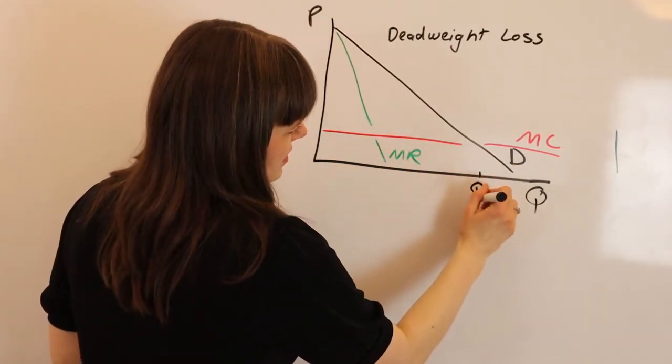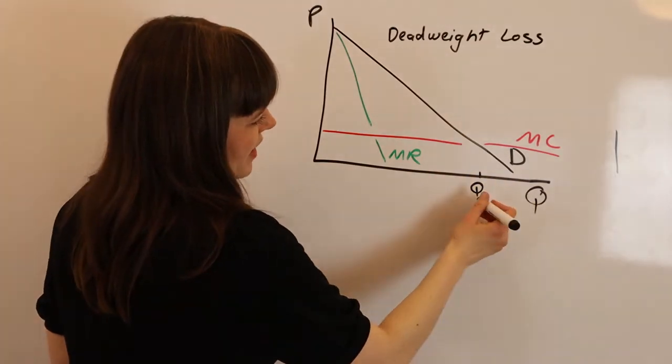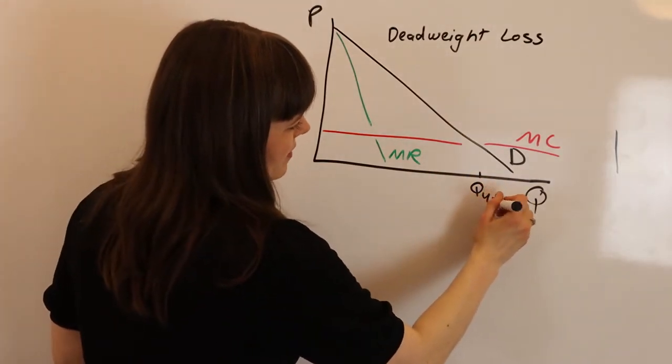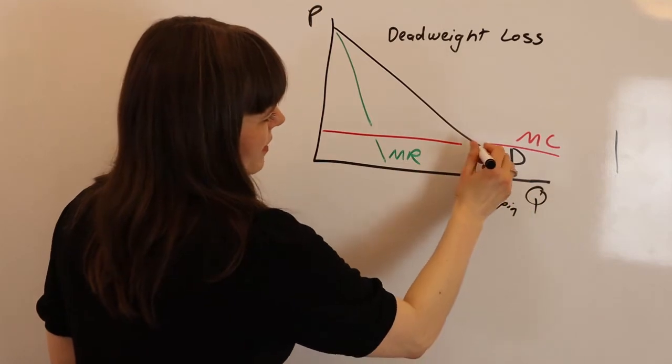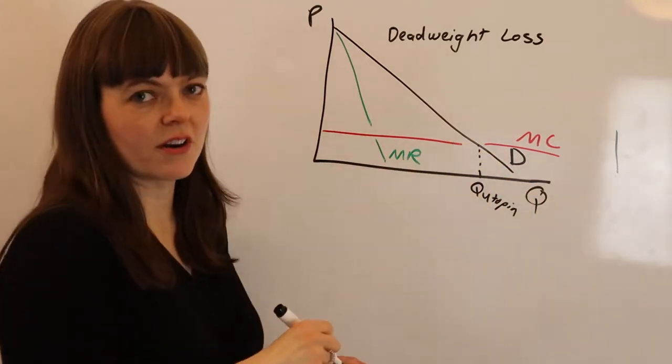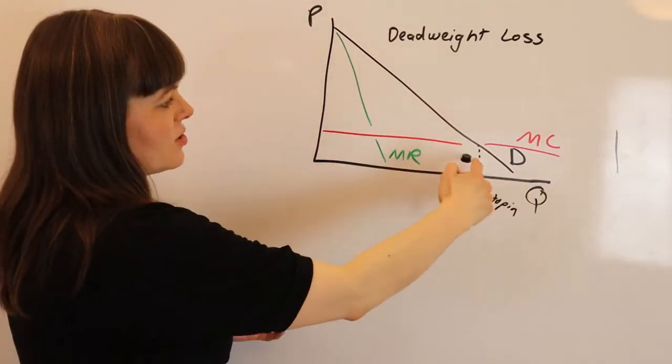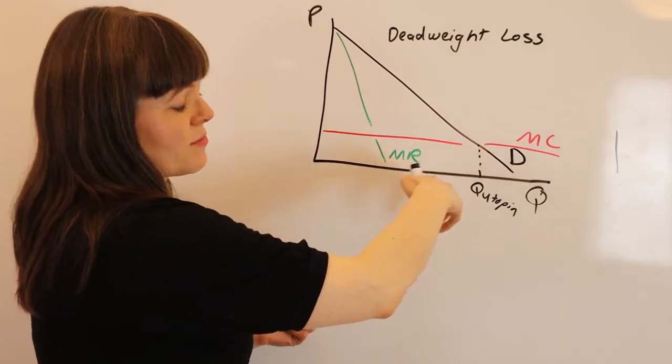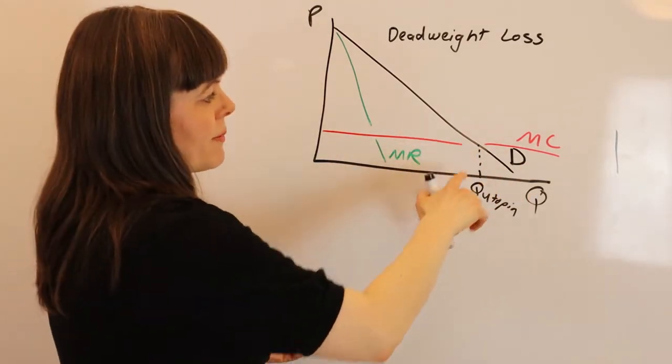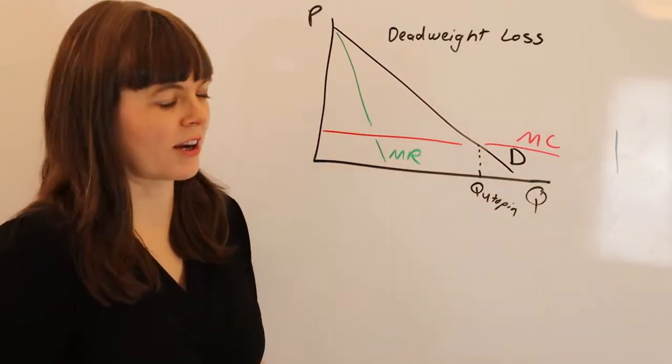So this would be like quantity in a utopia - the quantity where you just produce as many as you can, as many as people are willing to pay for if people are only paying the cost of production for that product.